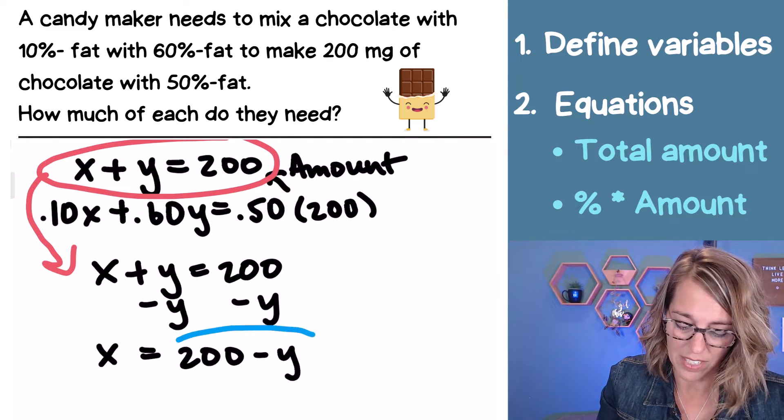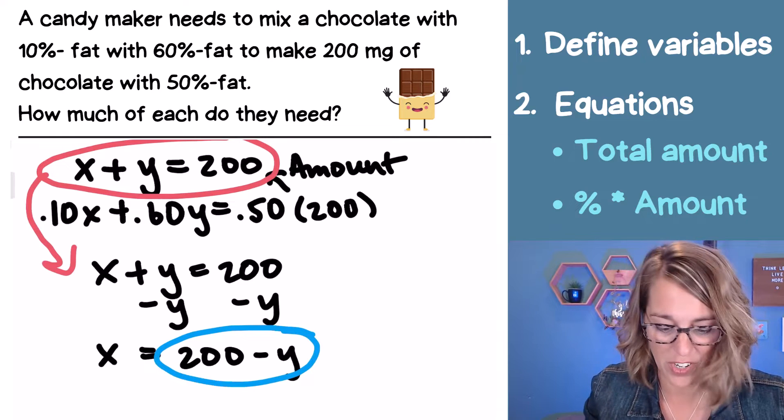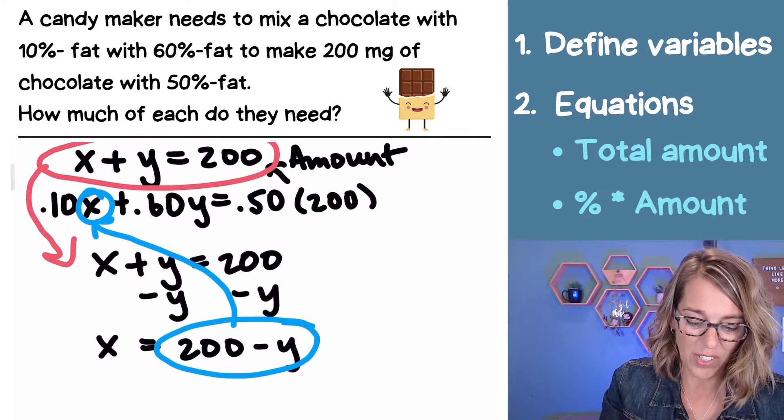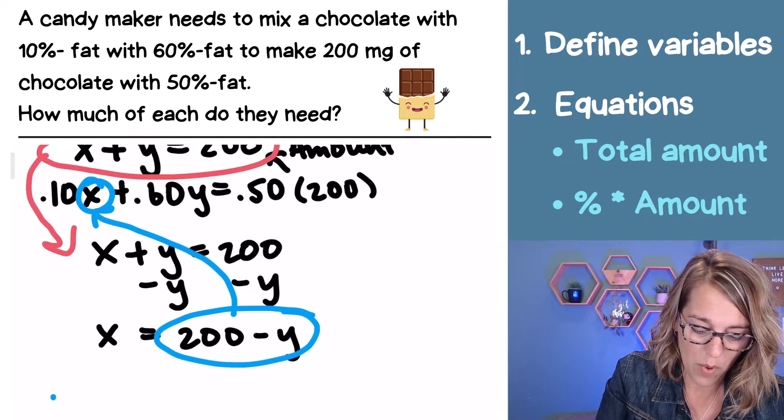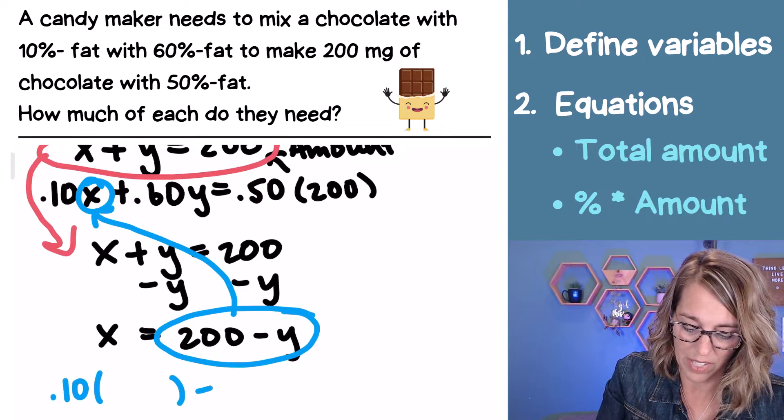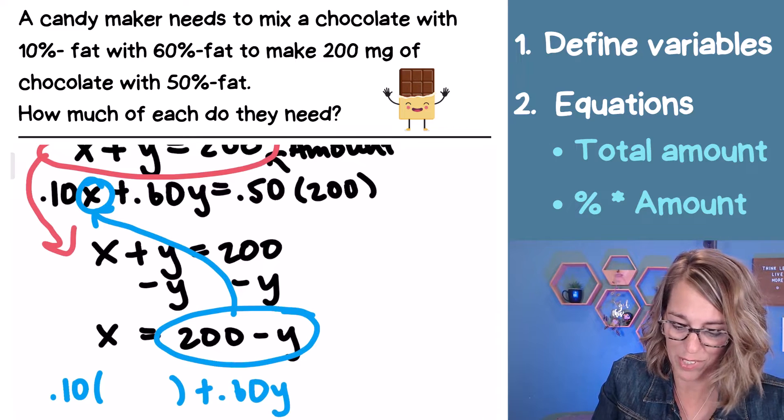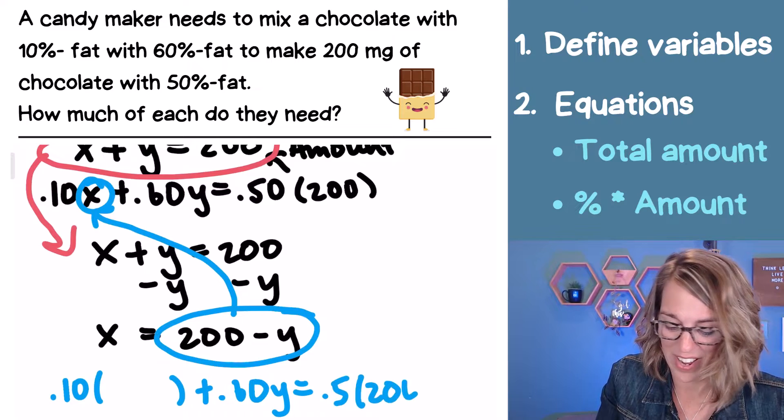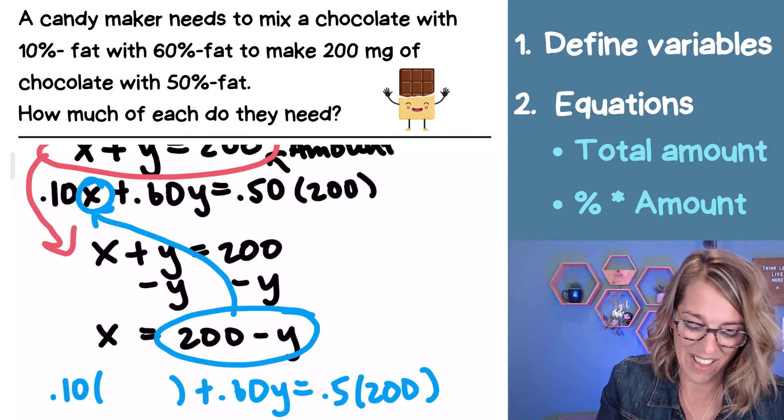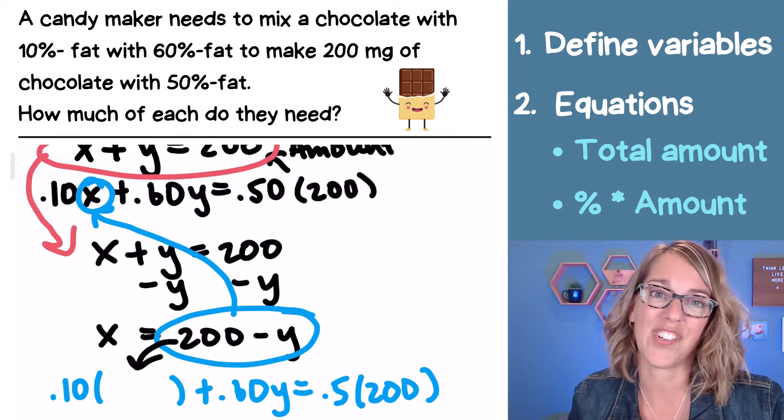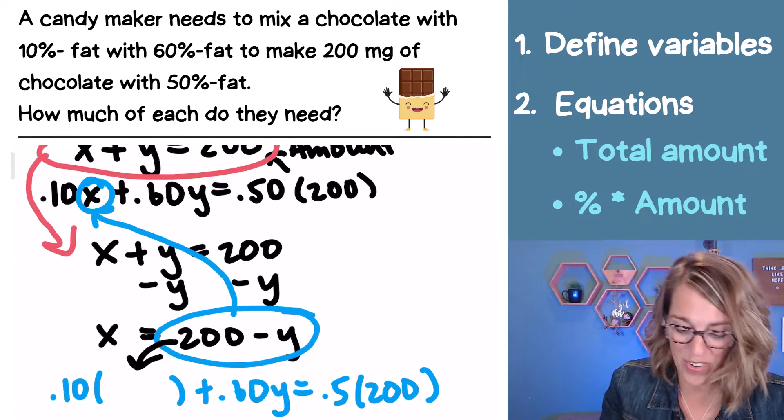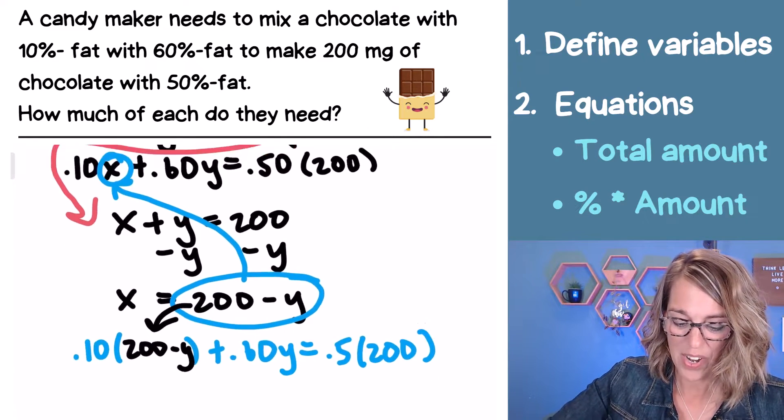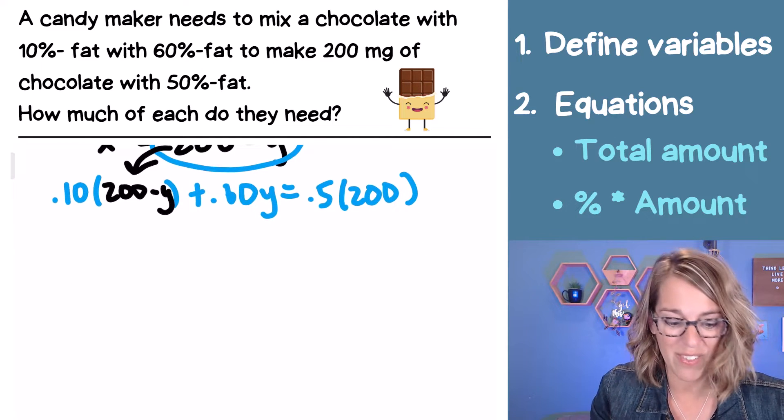So now I've got this expression for X from my first equation. And I'm going to plug that right into my second equation. So here's what that second equation looks like. It's 0.10 times X plus 0.60Y is equal to 0.5 times 200. Now I can go ahead and take that value that I have right up above there where X should be and replace it with my 200 minus Y. So now I'm feeling good because I can start working through the math.